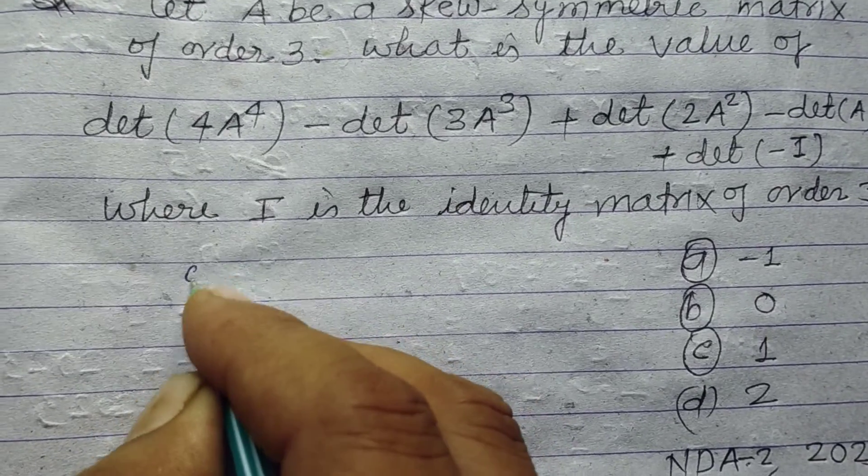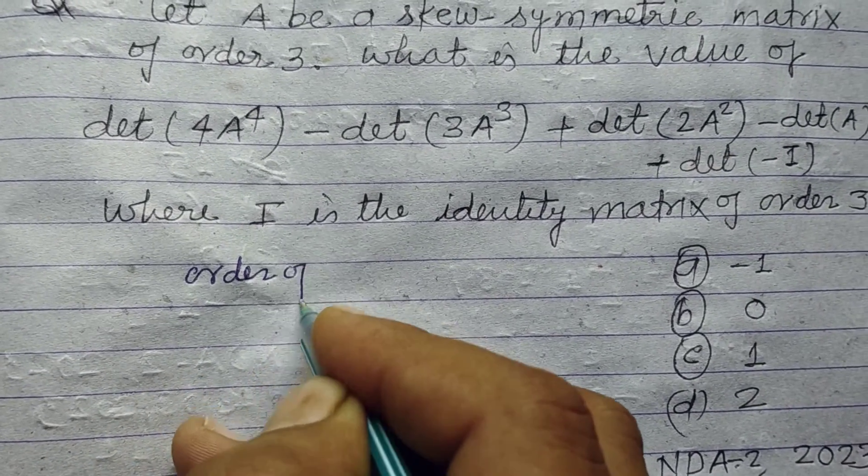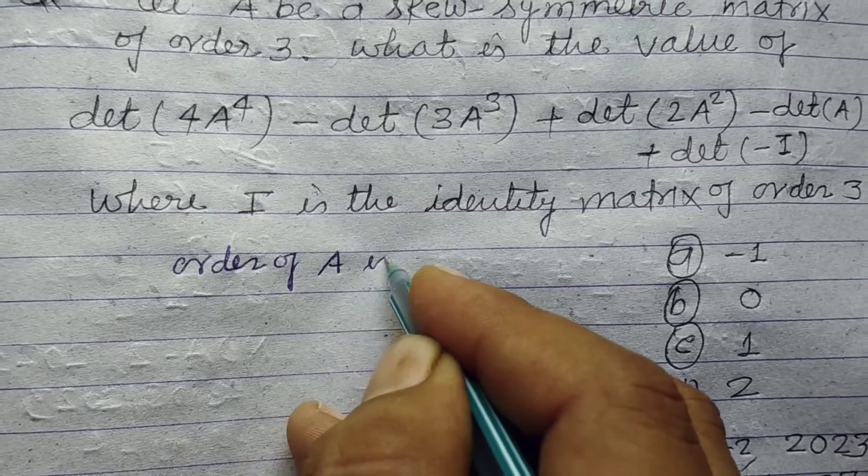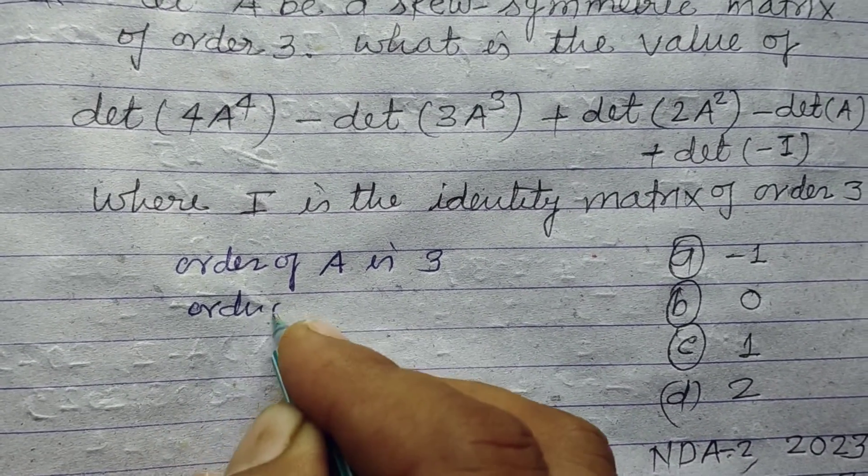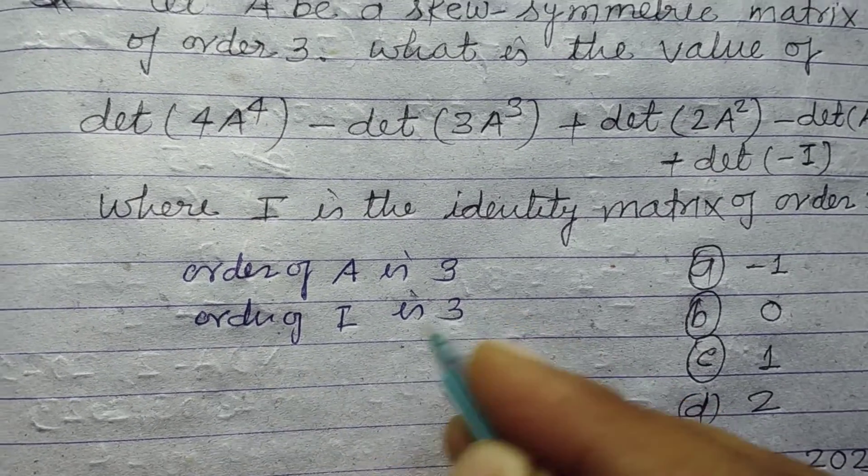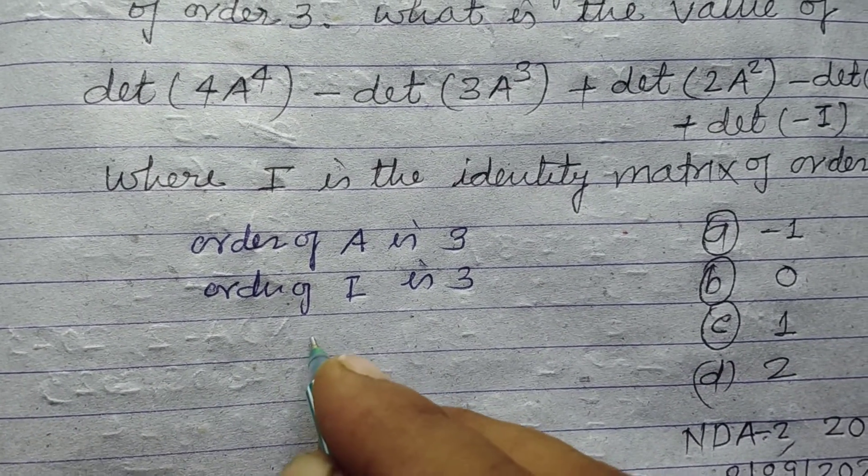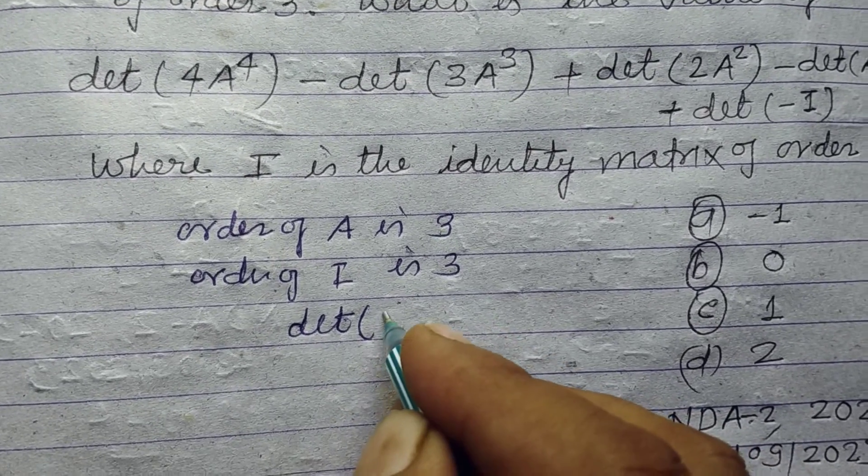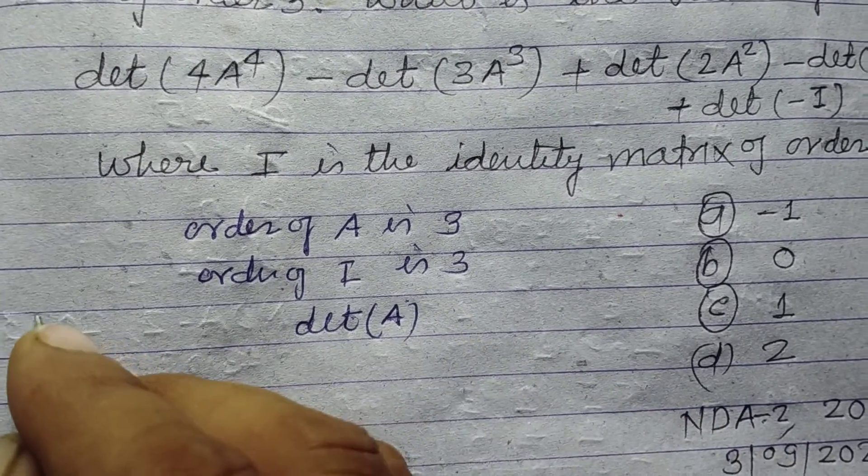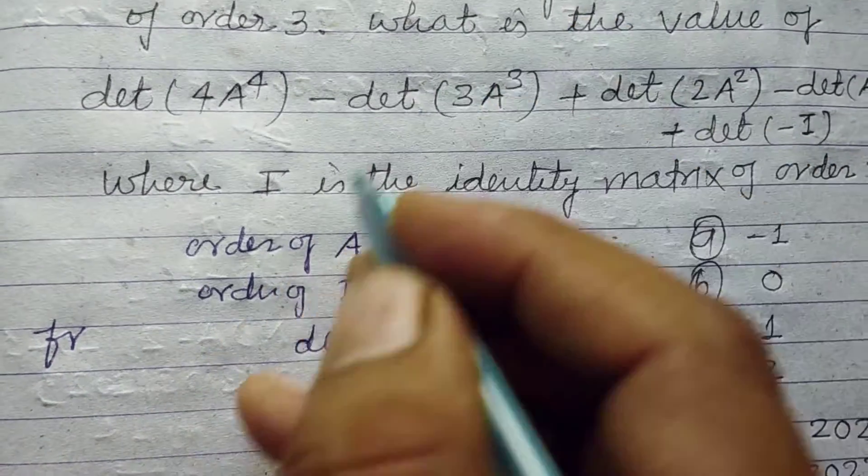So student, here order of matrix is 3, order of I is also 3. You know that the determinant of a skew-symmetric matrix is 0.